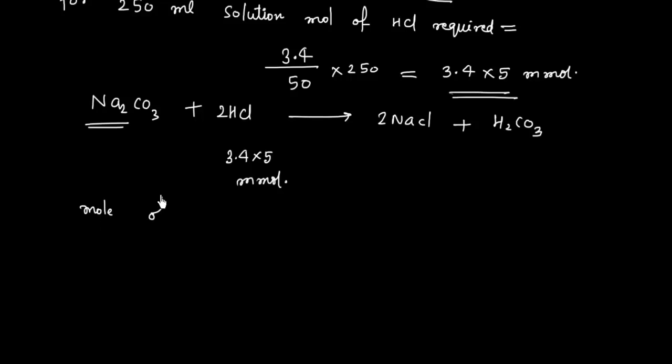So moles of Na2CO3, this is basically half of moles of HCl. So moles of HCl we have, that is 3.4 into 5, so 1 by 2 into 3.4 into 5. So this is moles of Na2CO3.